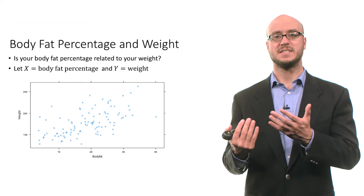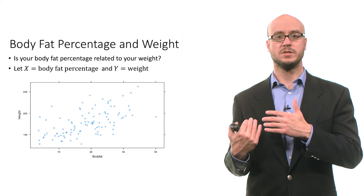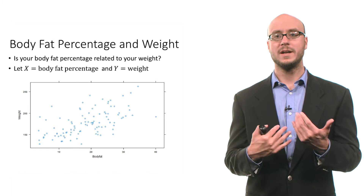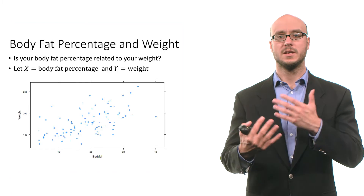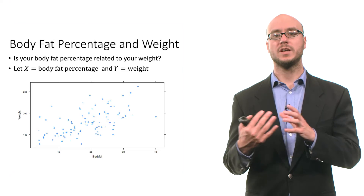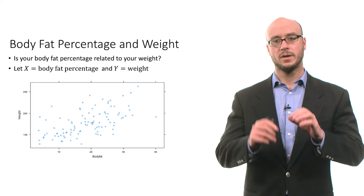And as a person's body fat percentage decreases, we'd expect their weight to decrease, meaning these two variables tend to move together, and we call that a positive linear relationship.